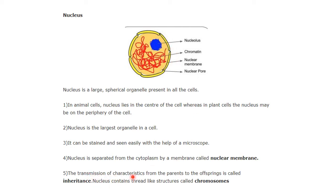What is the function involved in the nucleus? The transmission of characteristics from parents to offspring is called inheritance. That means traits present in the parent — such as physical appearance like green eyes or an attached earlobe — are some kind of characteristics of the parents. These can be transferred to offspring, and this is called inheritance. The nucleus contains thread-like structures called chromosomes, and it is from the chromosomes that the transfer of characteristics from parents to offspring occurs.